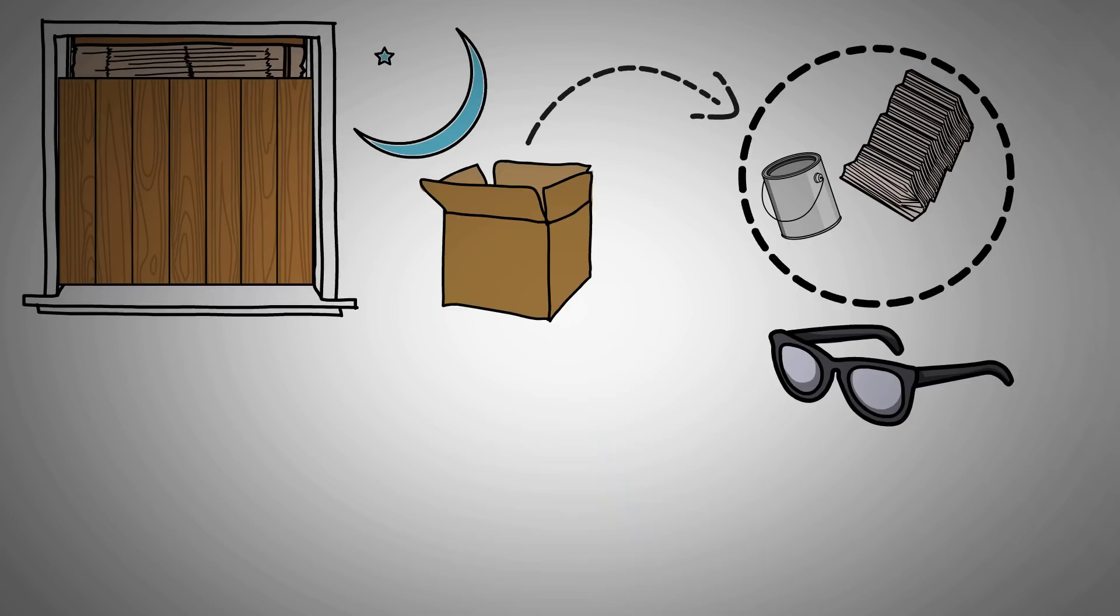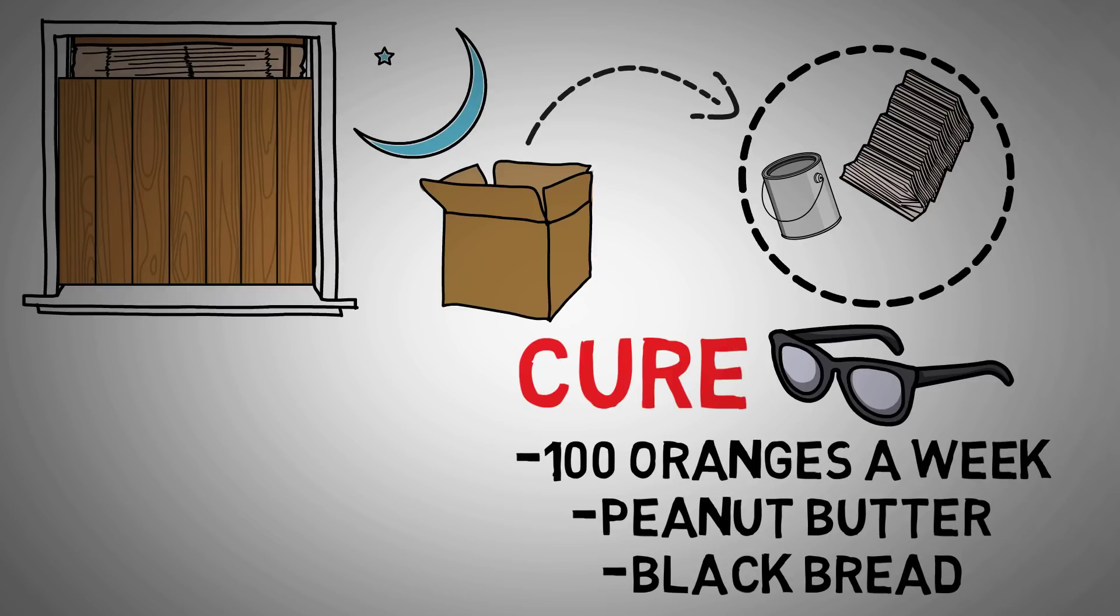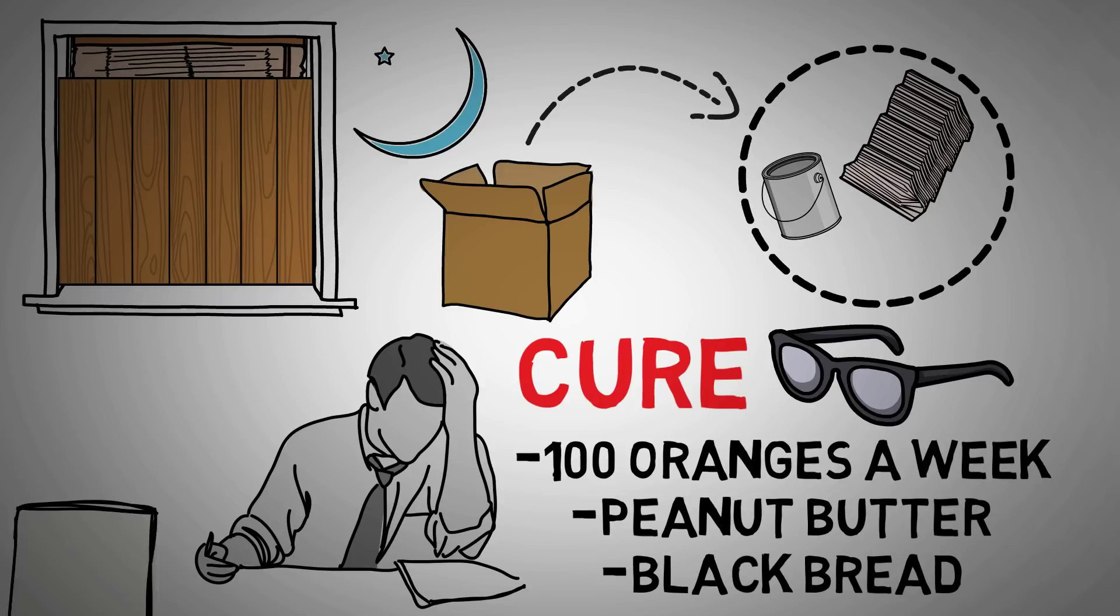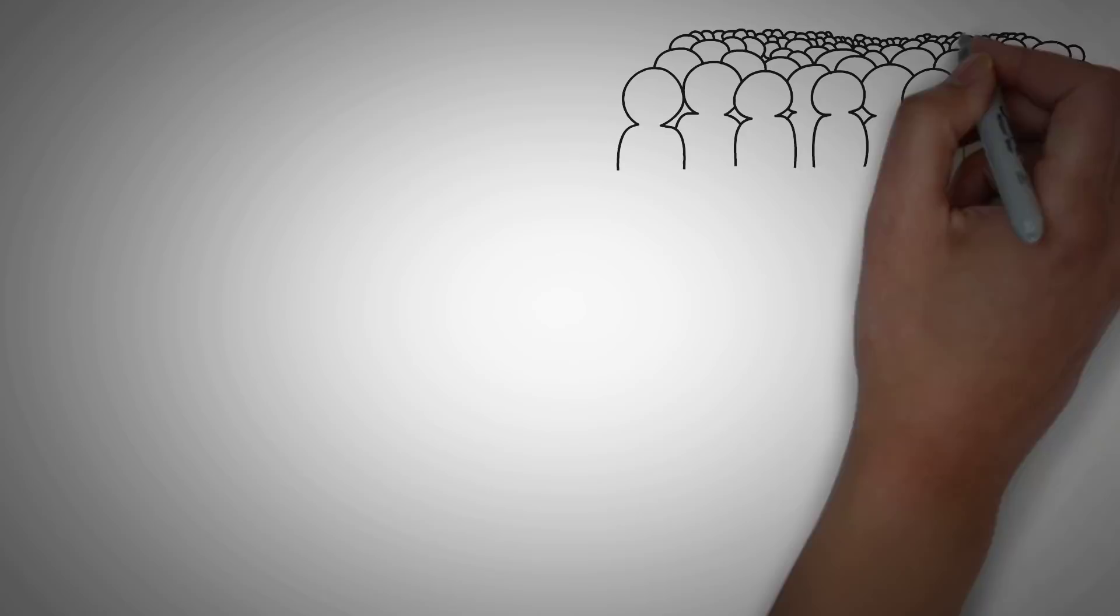Due to their father's extensive library of medical information, Langley believed that he could cure his brother's blindness. And part of that cure was to come from a particular diet of 100 oranges a week, peanut butter and black bread. Now you might be wondering why he was collecting so many newspapers. Well, they were actually collected so that Homer would have something to read when he regained his eyesight, which kind of warms your heart.